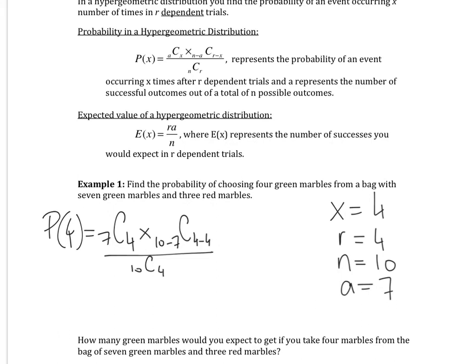Okay, so I'm just going to rewrite this. Seven choose four times three choose zero over 10 choose four. And you can go ahead and put that in your calculator. You'll get one-sixth, which is about 16%.